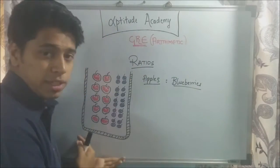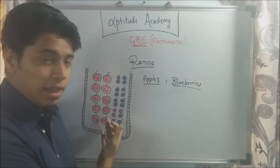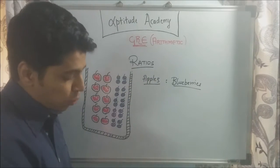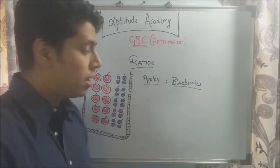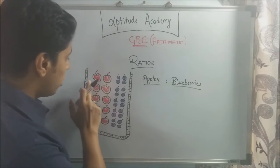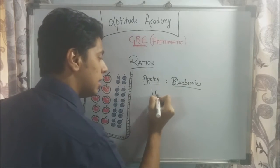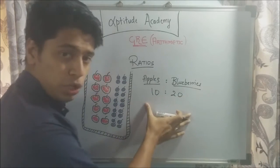Suppose you have a basket of fruits. You've got apples and blueberries. You've got 10 apples here and 20 blueberries. So what a ratio does is it gives you a way to relate an apple and a blueberry. Let's write first the total number of apples and the total number of blueberries. So we've got 10 apples and 20 blueberries. 10 is to 20. This is our initial ratio.